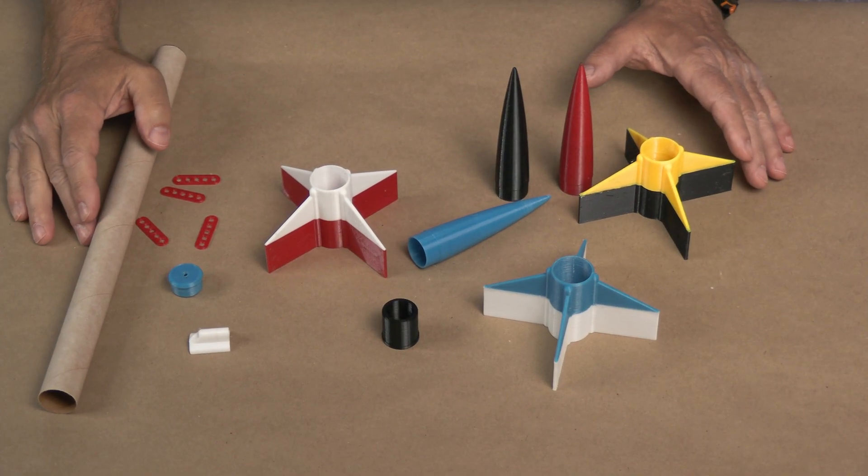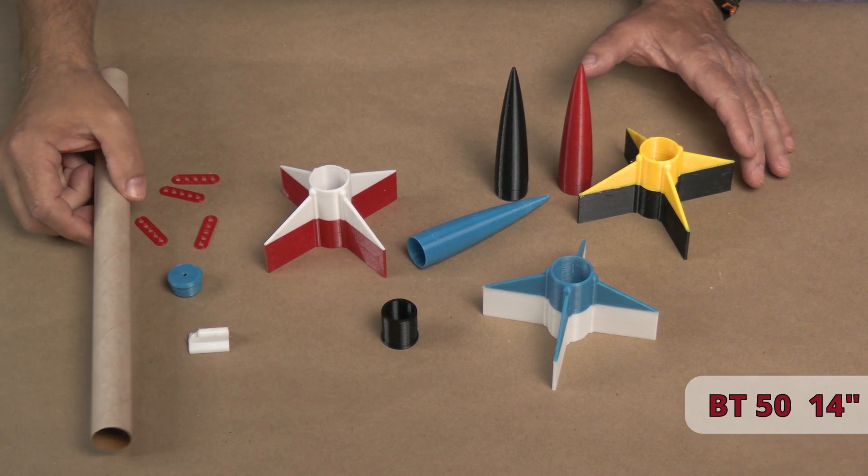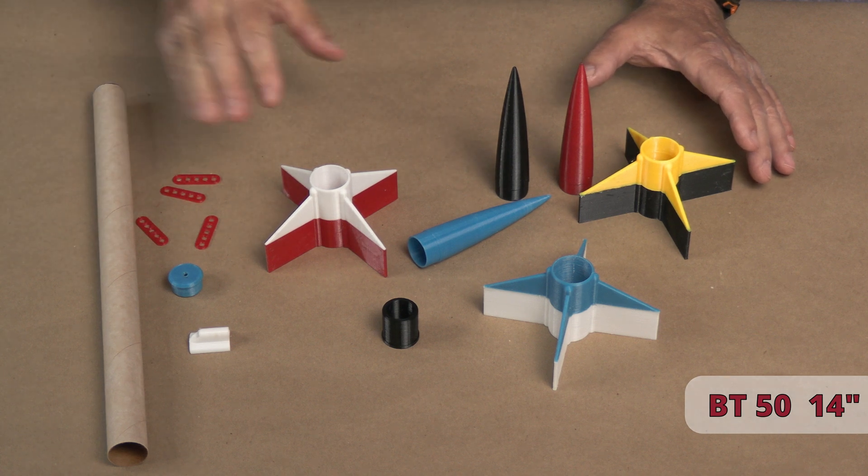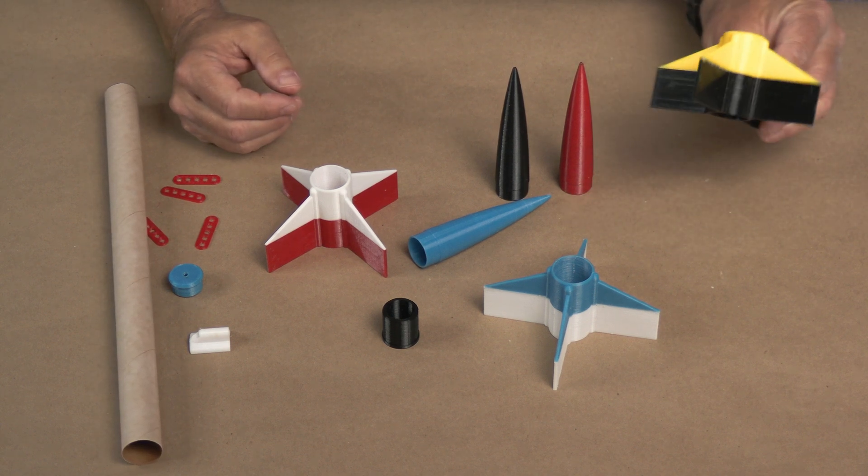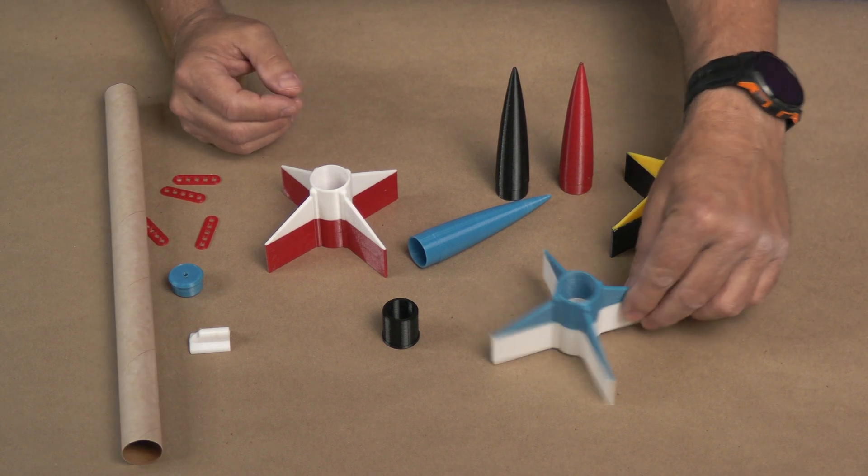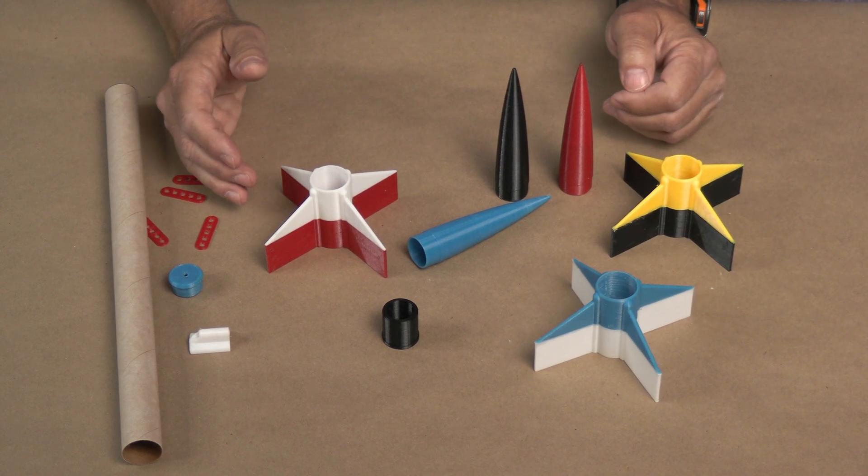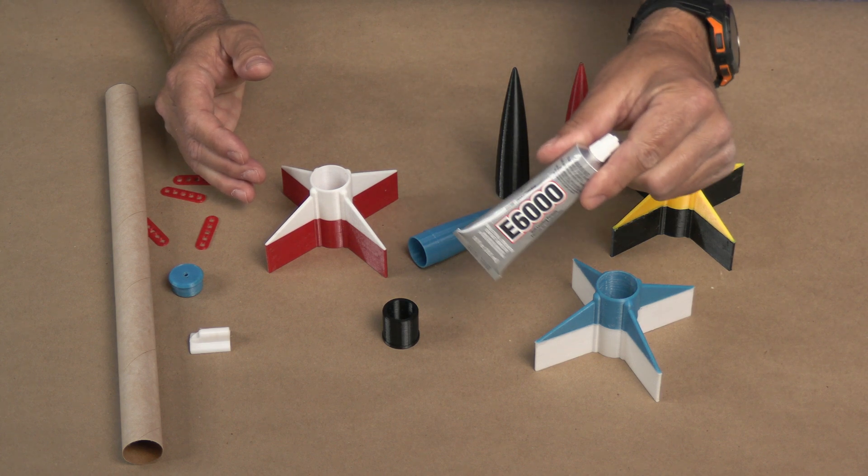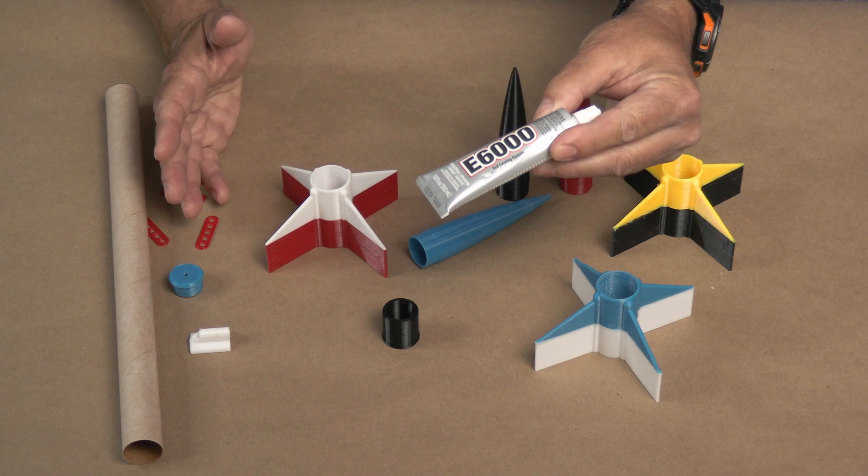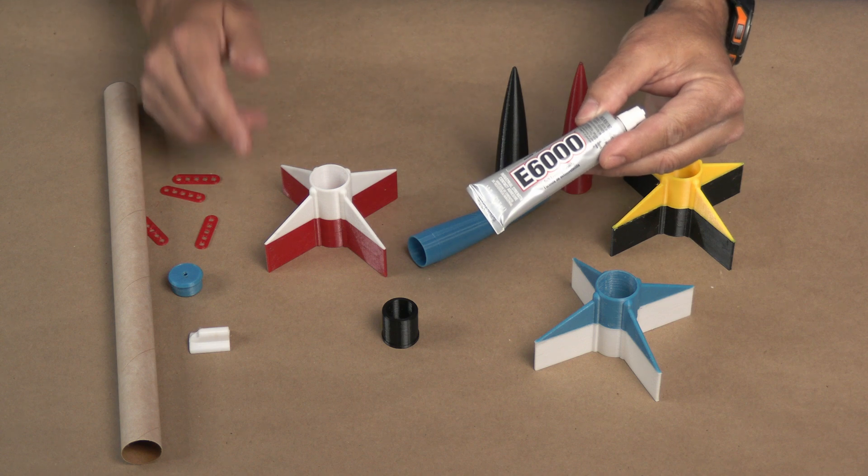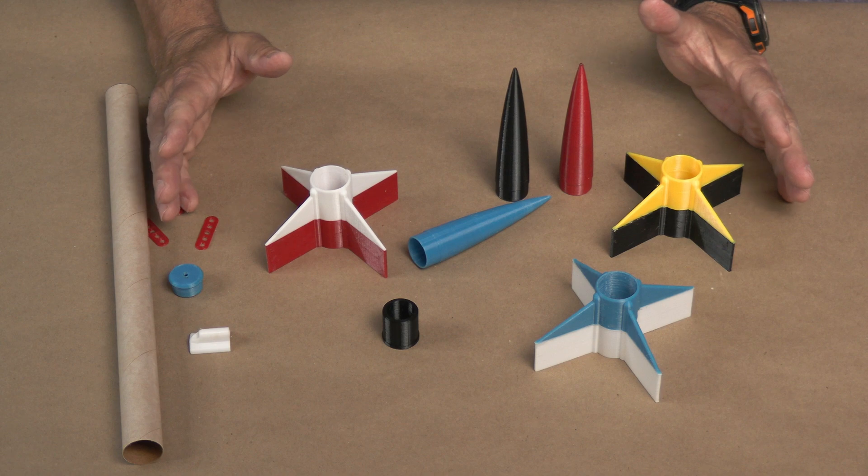I have everything I need here to make the rocket. A BT-50 tube that is cut to 14 inches, and various parts. I've printed them in some different color combinations. If you're working with a group, it's always fun to let the kids pick different colors and kind of personalize their rocket a little bit. But today I'll be building the traditional red, white, and blue. Oh, there's one more thing we need, and that is some E6000. This is my glue of choice, and it works really good for this project. I'll leave an affiliate link in the description, and you can check that out. Okay, so let's go ahead and get started building this rocket.